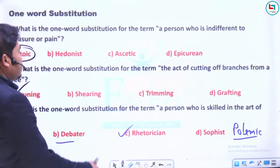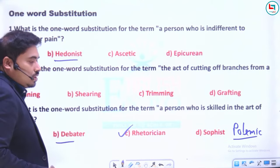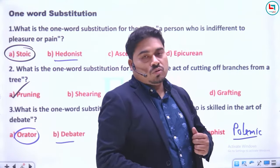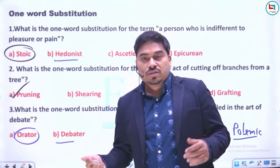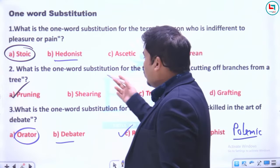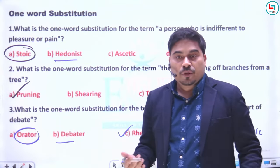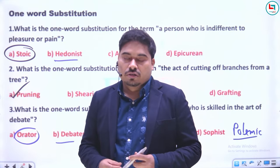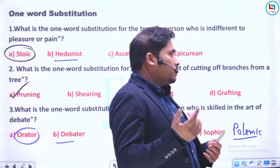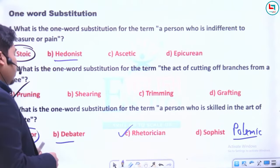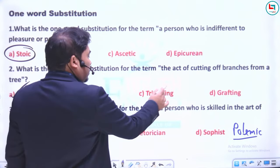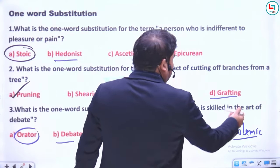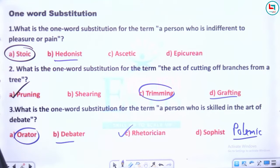Aur 'hedonism' — jo insaan apne jeevan mein pleasure ko bahut zyada tarjeeh de, usi cheez uske liye paramount ho. 'Epicurean' bhi wohi hai jo hedonist hai — Epicurus naam ke Greek philosopher ke naam se bana shabd. Related words: shearing, trimming, grafting — yeh sab juday shabd hain jab aap trim karte hain kisi bhi cheez ko.